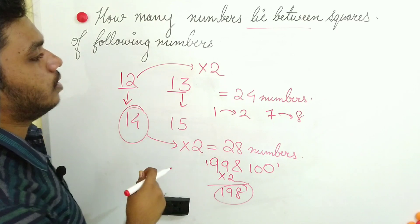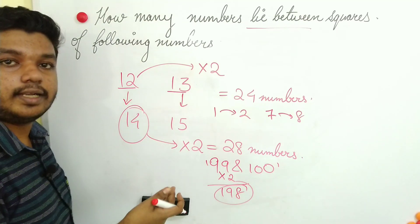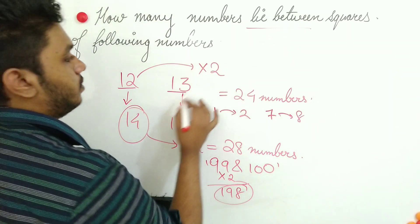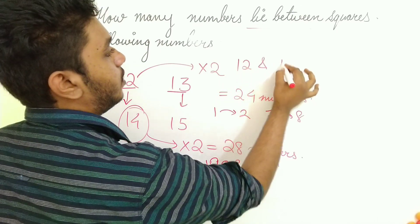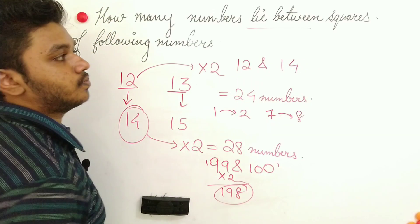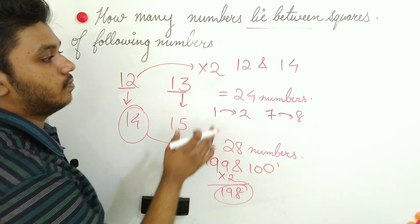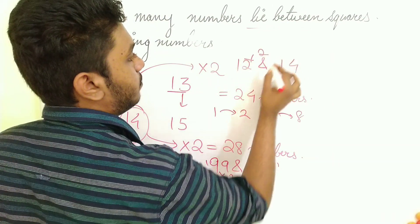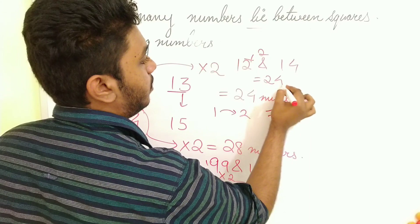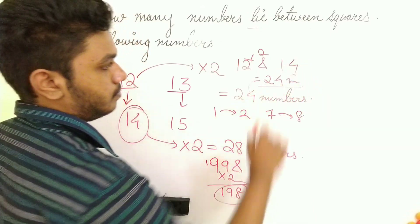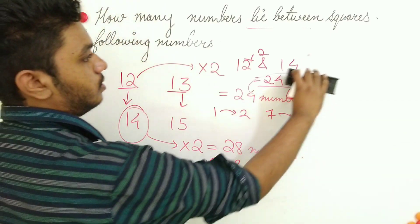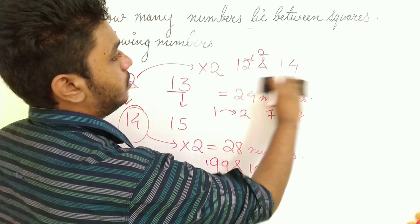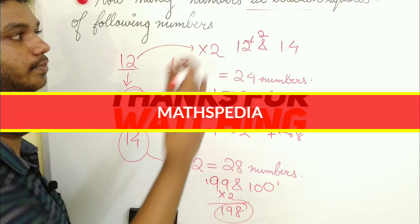So this is the question based on this. Otherwise you can go for directly the general method if suppose 12 and 14 if they ask you. So this condition is not applicable here. That means if I want to multiply with 2, I will get it as 24 numbers, but this is the wrong thing. So don't try this method in non-consecutive numbers.